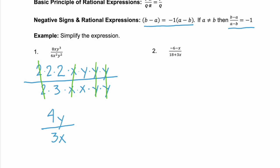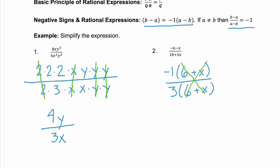In example two, we have binomials in the numerator and denominator, so we factor each and see what they have in common. The numerator has a GCF of negative 1, so factoring out negative 1 gives negative 1 times the quantity 6 plus x. The denominator, 18 plus 3x, has a GCF of 3, so factoring out 3 gives 3 times the quantity 6 plus x. The common factor 6 plus x simplifies out, resulting in negative 1 over 3, or negative one-third, as the simplified expression.